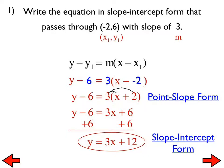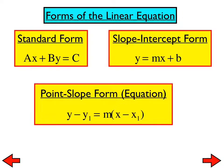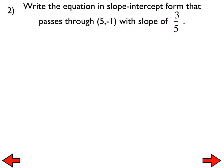Let's quickly review the forms of a linear equation. We talked about standard form yesterday, we've been discussing slope-intercept form, and now we have point-slope equation — sometimes called point-slope form. They are the same thing. We need all three of these very clear.